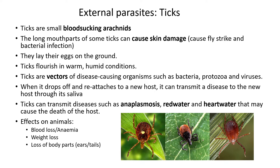The first thing we can look at is ticks. They are small blood-sucking arachnids. Arachnids is the class of animals like your spiders and so on. They're basically thick-skinned on the outside — they have an exoskeleton. They also have long mouth parts that they use to suck blood, and those mouth parts stick to the outside of the skin of the animal, causing skin damage.